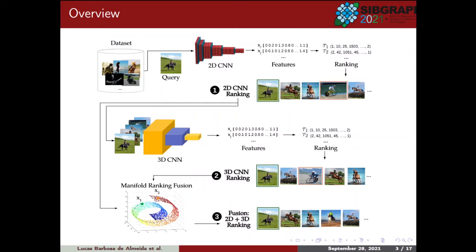Step 1: The computed rankings define the sequence of images that are used as input to a 3D-CNN, so that instead of considering temporal information, the similarity relation of the neighborhoods of the image is used. The 3D-CNN is also trained by Transfer Learning, and the features extracted are used to compute another set of rankings, denoted Tau3.